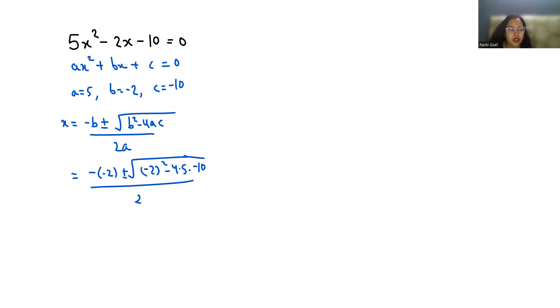Minus times minus is plus, so we have 2 ± √4... 4 times 5 is 20, 20 times 10 is 200, and minus times minus gives us plus 200, all divided by 10.